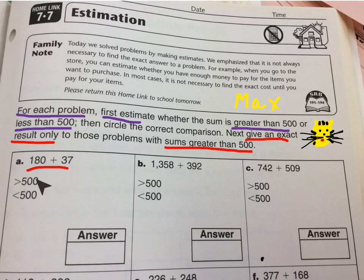So first, 180 plus 37. Let's just estimate this. 180 plus 40, I know 18 plus 4 is 22, so 180 plus 40 is about 220. That is less than 500, so I circle less than 500. And then I don't need to do the addition here. Moving on to the next one.